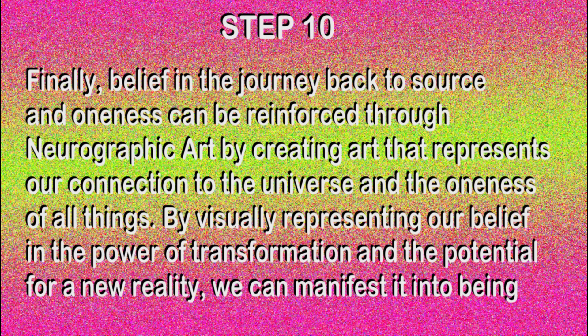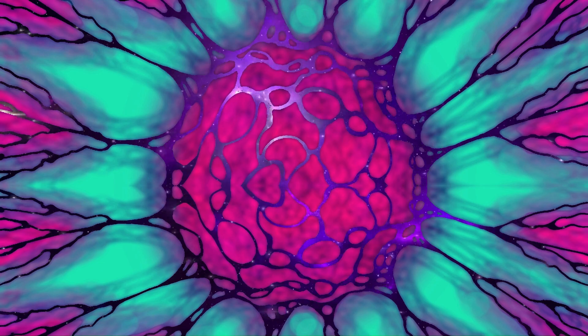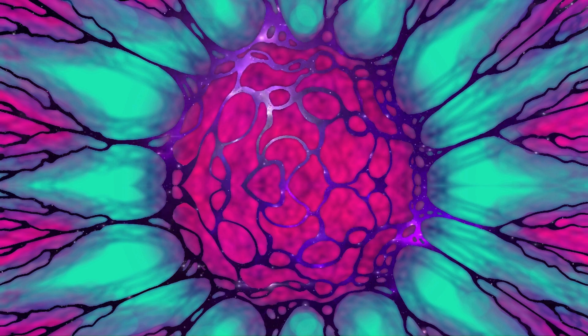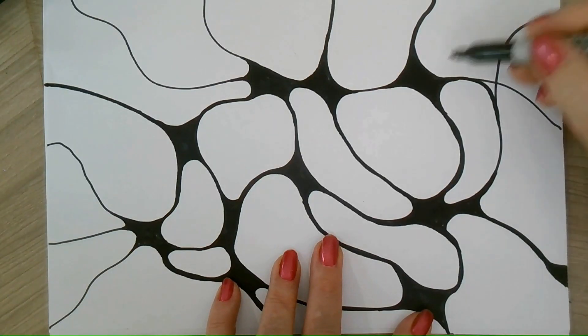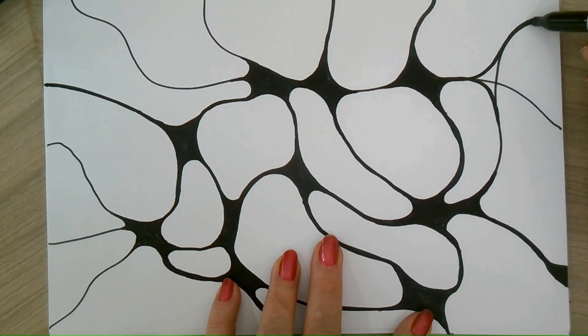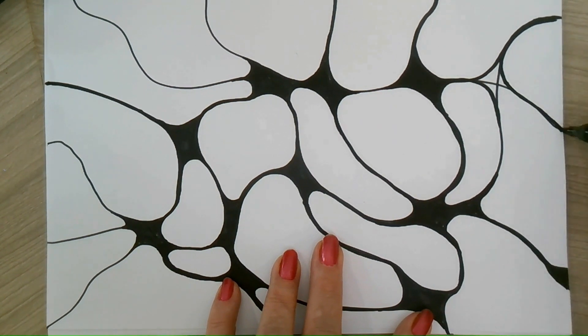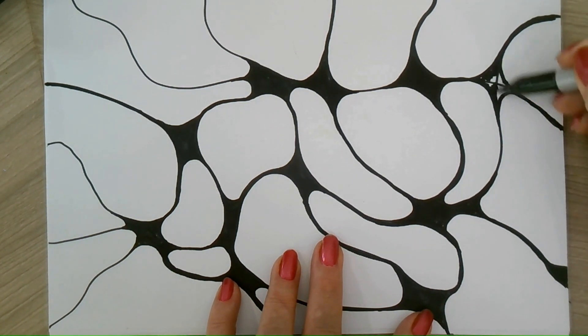Step ten: belief in the journey back to source and oneness can be reinforced through neurographic art by creating art that represents our connection to the universe and the oneness of all things. By visually representing our belief in the power of transformation and the potential for a new reality, we can manifest it into being.